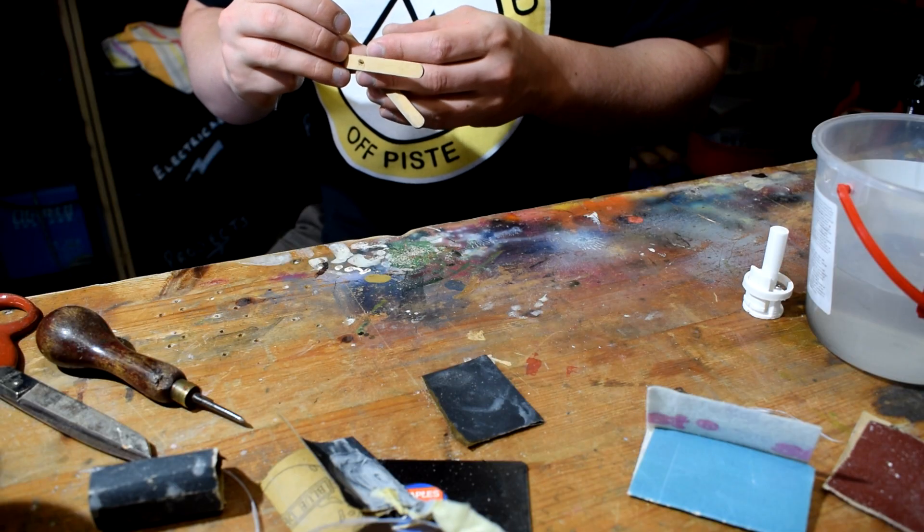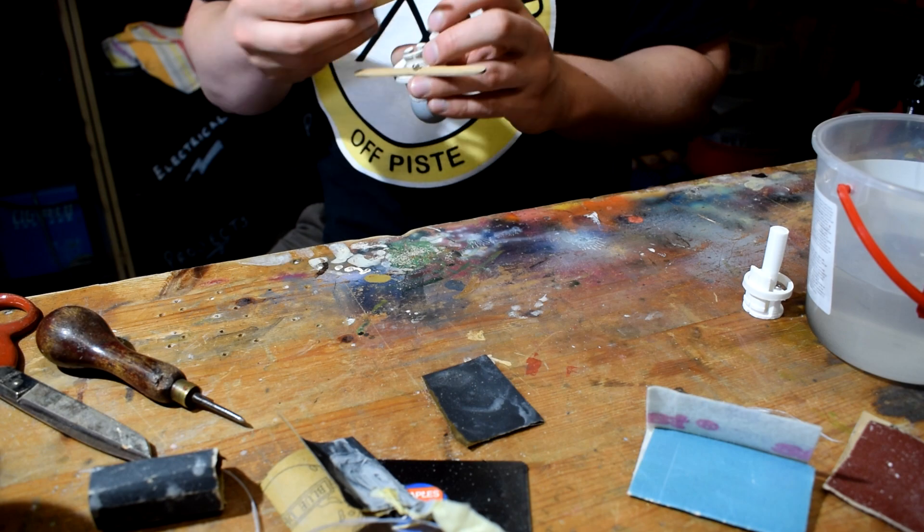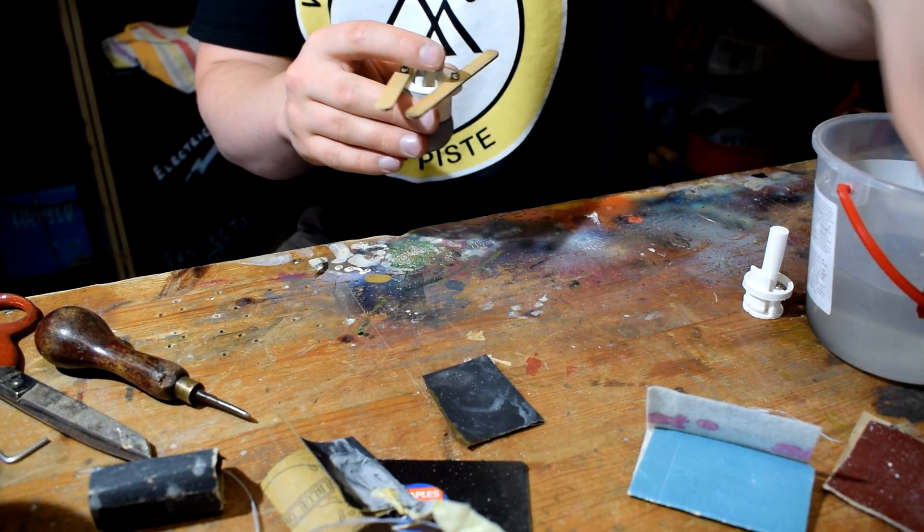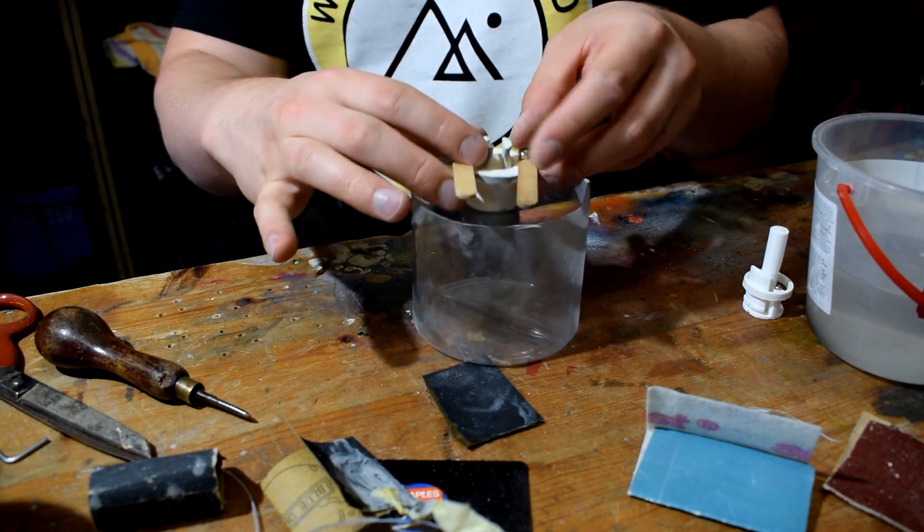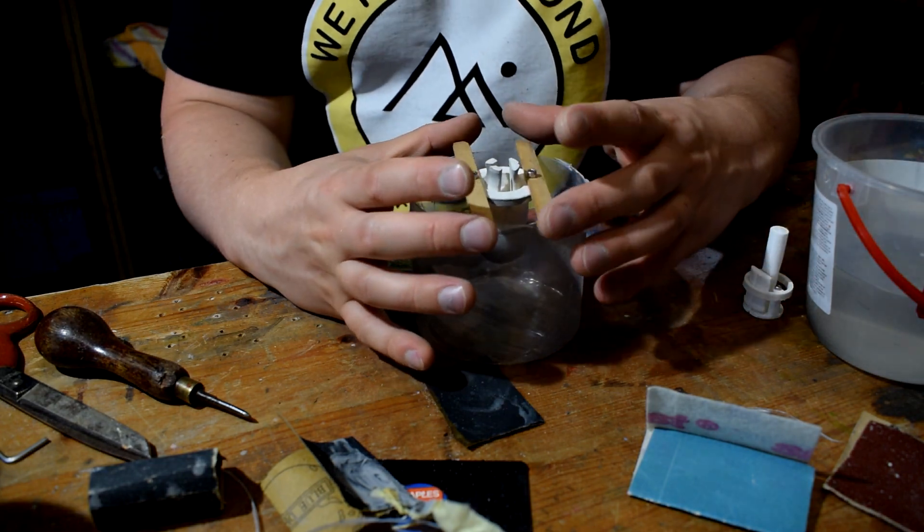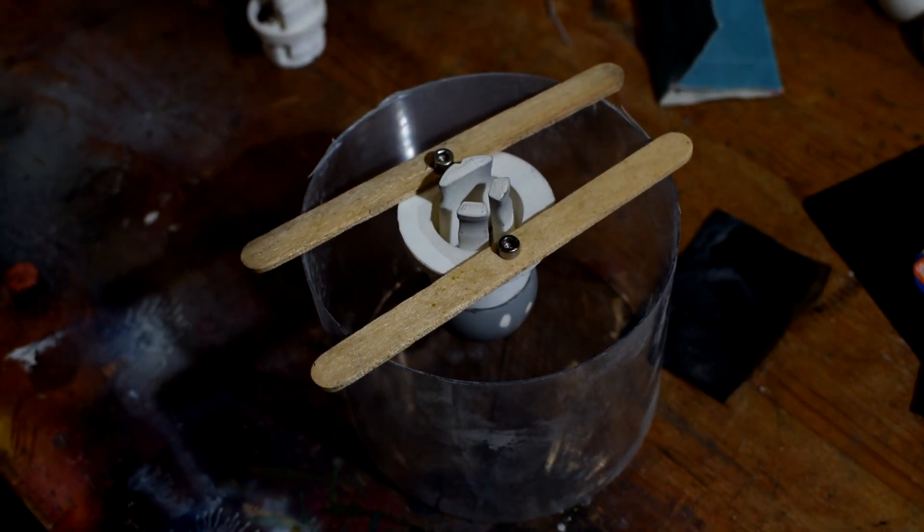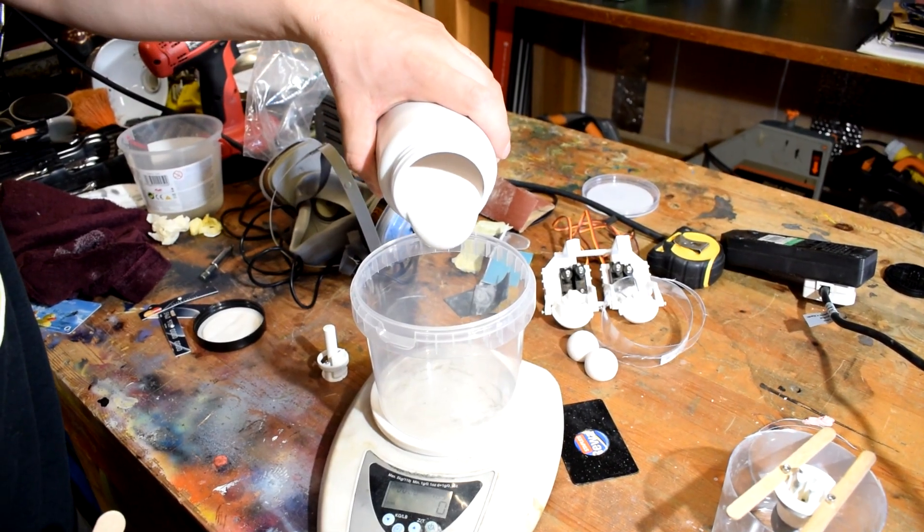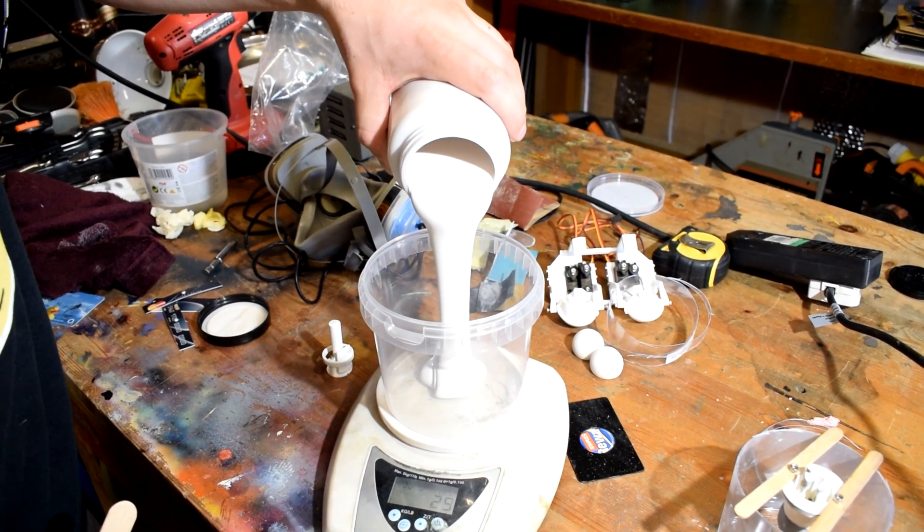You also need a way to suspend the blank, so just screw or stick some lolly sticks or anything to the top just to stop it from falling into the container.